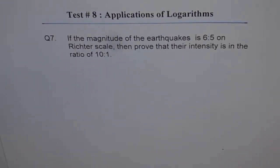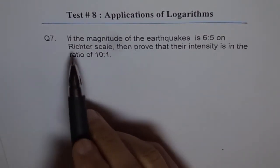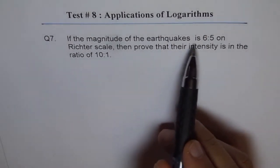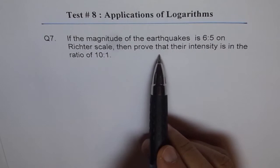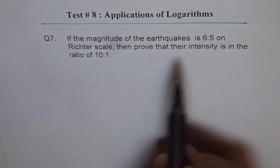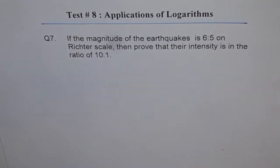Application of logarithms, question 7. If the magnitude of the earthquakes is 6 to 5 on Richter scale, then prove that their intensities is in the ratio of 10 to 1.